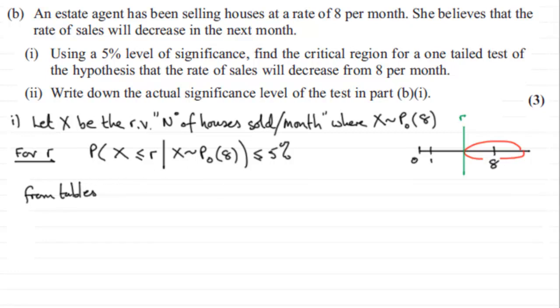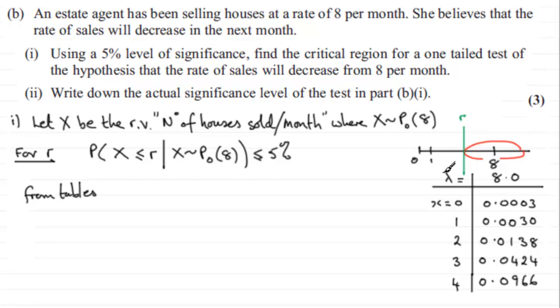and the tables that you would look in, and I've got an extract here, would be the cumulative Poisson distribution tables. You'd look for your mean lambda being 8, and you've got your observed values coming down like this, okay? And you've got your probabilities that give you the probability of being less than or equal to a given number. So what we're looking for then is an observed value that gives us a probability less than 5%, 0.05.